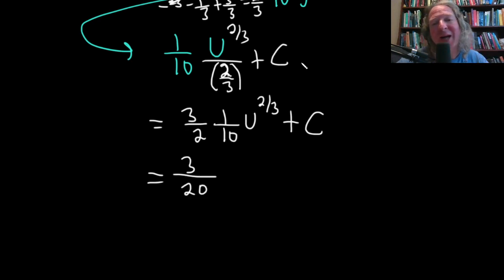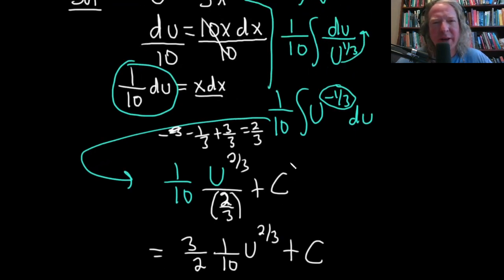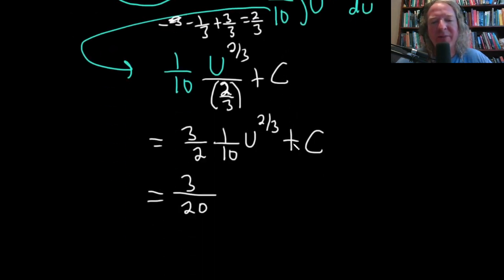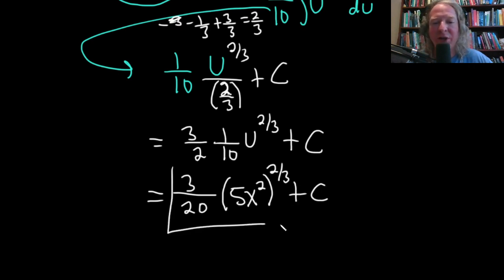And we're not done. We got to go back to x, right? And so what was it? u is 5x squared. So this is going to be 3 over 20 times parentheses 5x squared to the 2 thirds plus our constant of integration, capital C. So works out quite nicely in this example.